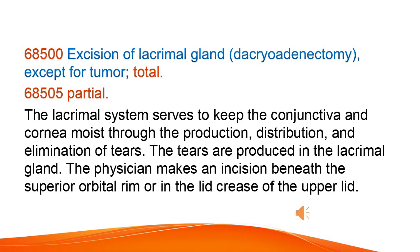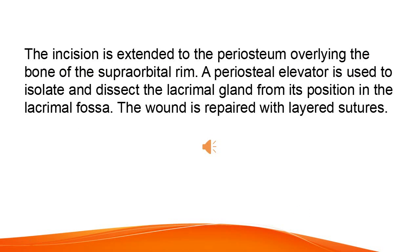The lacrimal system serves to keep the conjunctiva and cornea moist through the production, distribution, and elimination of tears. The tears are produced in the lacrimal gland. The physician makes an incision beneath the superior orbital rim or in the lid crease of the upper lid. The incision is extended to the periosteum overlying the bone of the supraorbital rim. A periosteal elevator is used to isolate and dissect the lacrimal gland from its position in the lacrimal fossa. The wound is repaired with layered sutures.